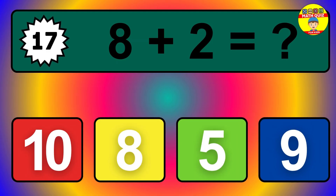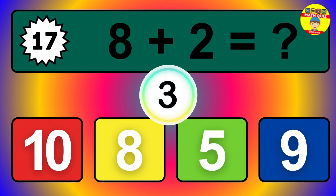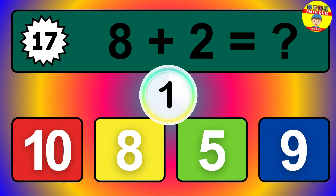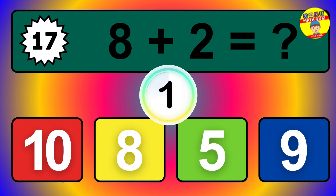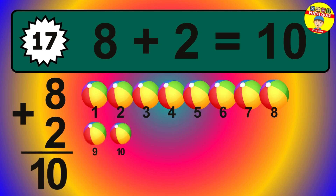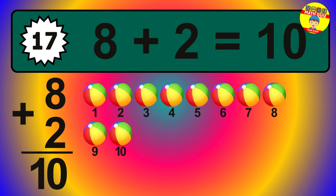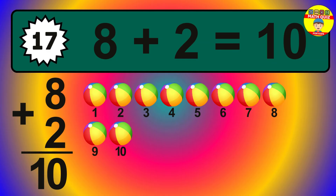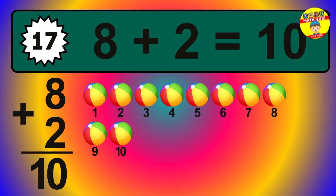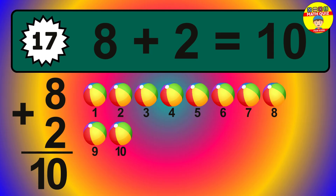Question 17. 8 plus 2 equals what? So the answer is 8 plus 2 is 10. Let's count it: 1, 2, 3, 4, 5, 6, 7, 8, 9, 10.